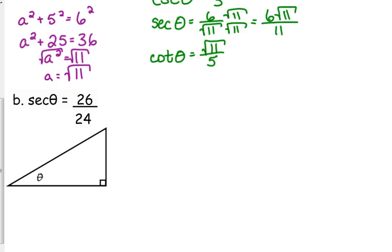The way that I go through this is I think, okay, secant is the reciprocal of cosine. Cosine is the adjacent over the hypotenuse, so my hypotenuse is 26, my adjacent is 24.